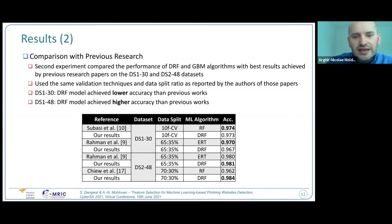Looking at the second dataset, DS2-48, same study by Rahman et al. on 65-35 split, their ERT model achieved 0.98, while our distributed Random Forest achieved 0.981. And another study with 70-30% split reported the best result with Random Forest 0.962, which was significantly lower than our distributed Random Forest at 98.4%.